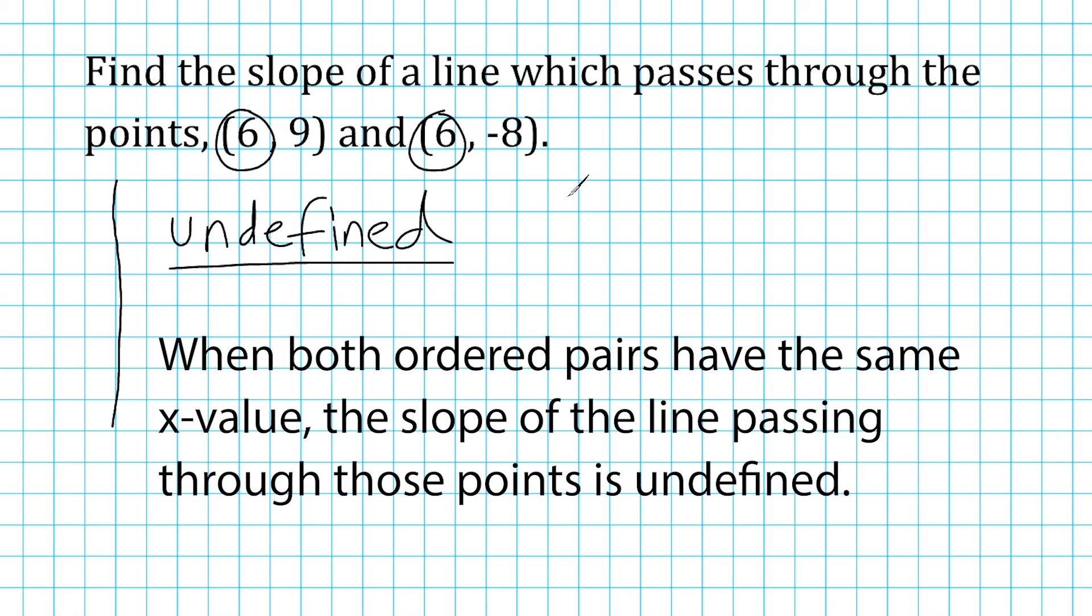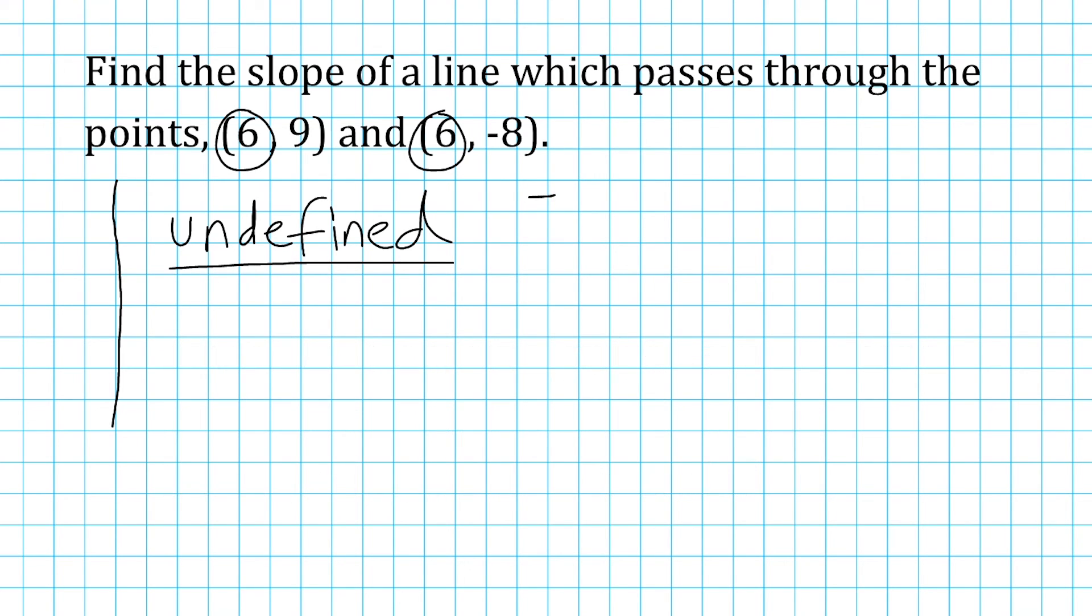Well, let's just see what happens if we plug in the numbers into our equation. So we're going to start with the change in y values, which is going to be negative 8, take away 9. And we're going to put that over 6, take away 6. So for the numerator, we have negative 17. And for the denominator, we have 0. So whenever you have 0 for a denominator, the slope of your line is going to be undefined.